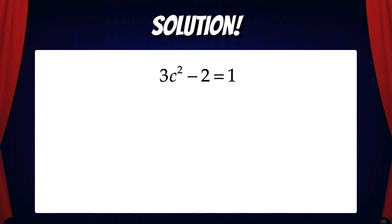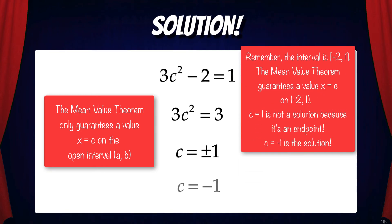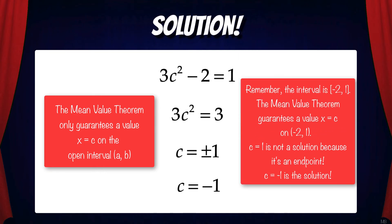So 3c squared minus 2 equals 1. Then we're going to solve for c. We get 3c squared equals 3, so c equals plus or minus 1 — two values of c. But which one do we choose? We have to remember that the mean value theorem only guarantees us a value x equals c on the open interval a,b. The interval is negative 2, 1, so c equals 1 is not a solution because it's an endpoint. That means c equals negative 1 is the solution.